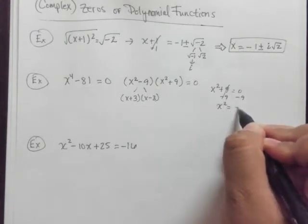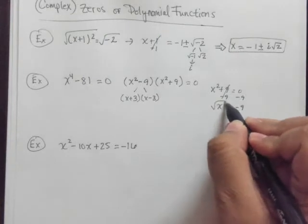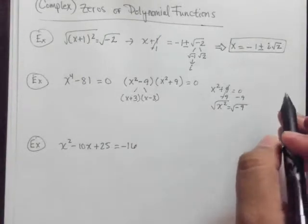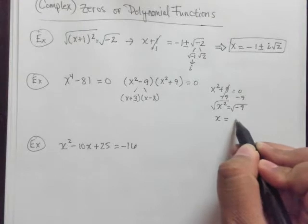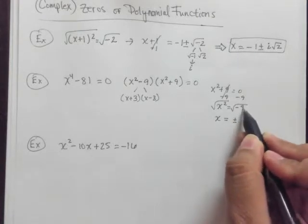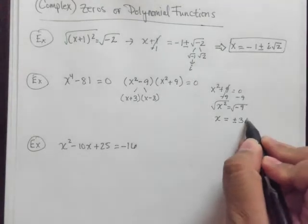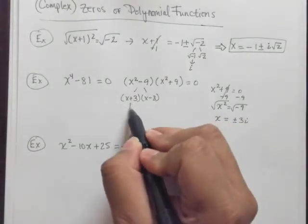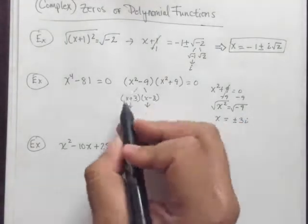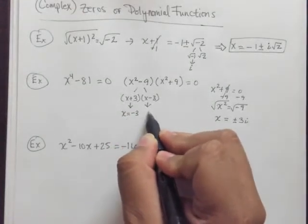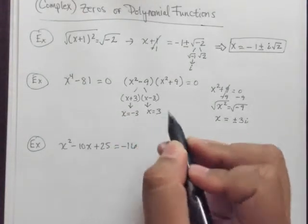So subtract 9 from both sides. x squared equals negative 9, and then we're going to take the square root. And so in this case, x will equal plus and minus the square root of 9 is 3. And the square root of this negative unit here is i. And by the zero factor property, the same thing holds here.